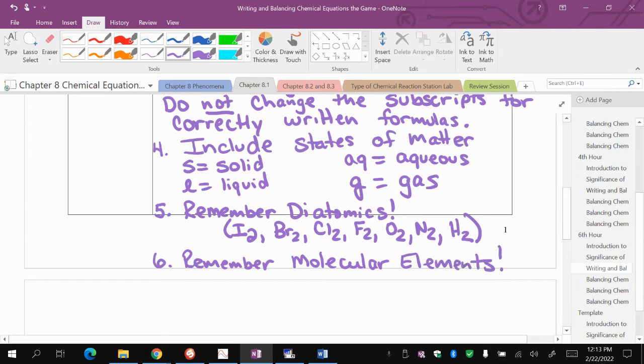You also want to remember the molecular elements. These are also listed on the back of your periodic table underneath the diatomics. It includes phosphorus, which there's four of them when phosphorus is by itself, and sulfur, which there's eight, S8, when it's by itself.